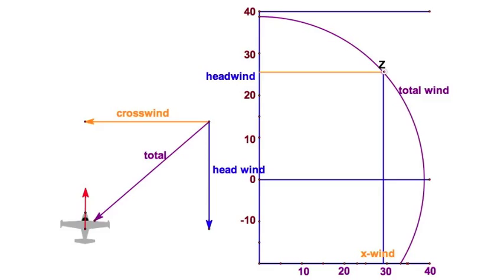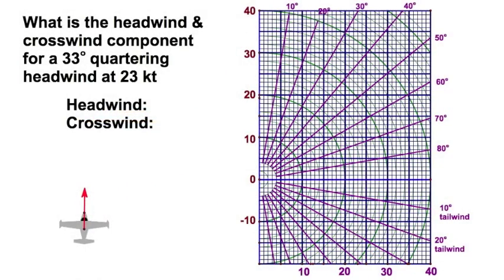Let's do an example. Well, there's our 33 degree quartering headwind, and there is the speed of 23 knots. All we need to do is, well, we've got this point right here. All we've got to do is read, and I'm going to see right there. I'm going to read these numbers right here, and right here.